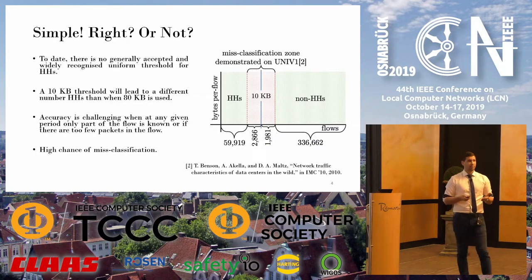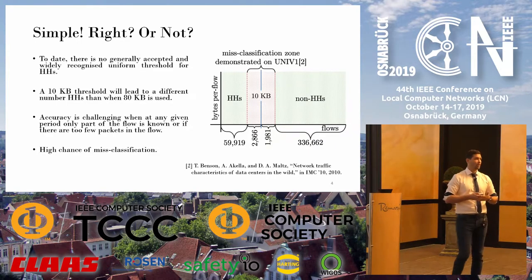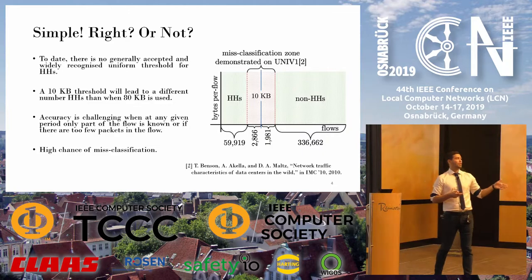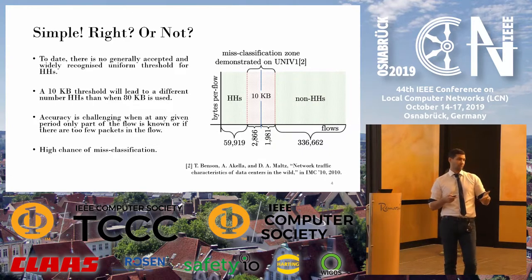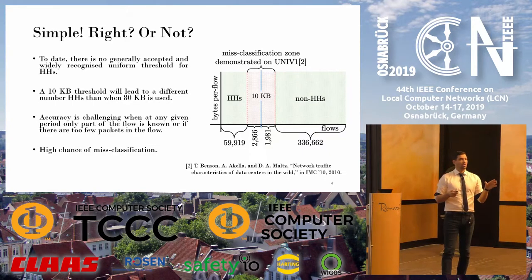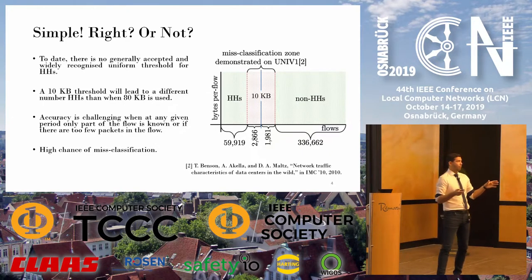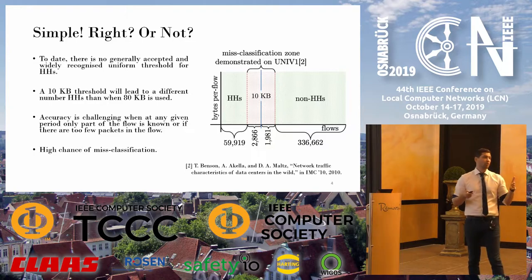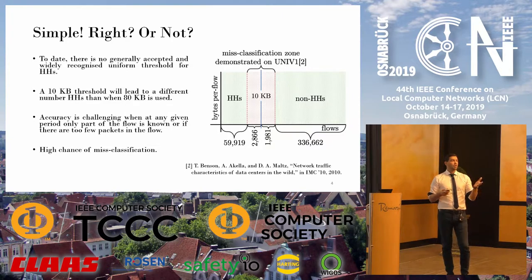This sounds quite easy and simple, but in reality it is not. Because to date, there is no generally accepted uniform threshold for heavy hitter detection. While some papers use a 10 kilobyte threshold, others may use 1 megabyte, 100 kilobytes, and so on. This causes confusion when doing research in heavy hitter detection, and it looks like researchers just use the threshold which suits their results most.